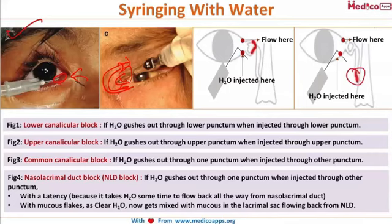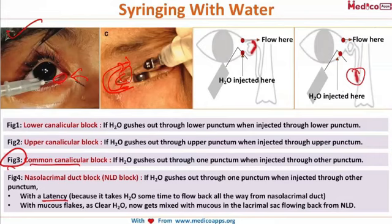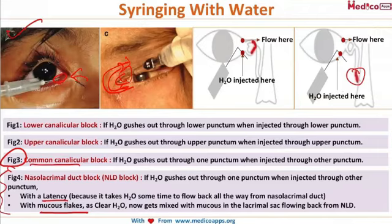In nasolacrimal duct obstruction, the water also passes from one punctum and comes out through the other, but with two distinguishing features compared to common canaliculus block: first, latency — the water does not come out as quickly; and second, it is mixed with mucus flakes, because mucus is naturally present in the nasolacrimal duct. So the two syringing features of NLD block are latency and mucus flakes.